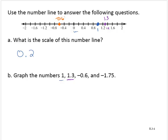Negative 1.75. Well, I know where negative 1.6 is, and I know where negative 1.8 is. 1.7 would be halfway between them. And so negative 1.75 would be halfway between negative 1.7 and negative 1.8, so about here.